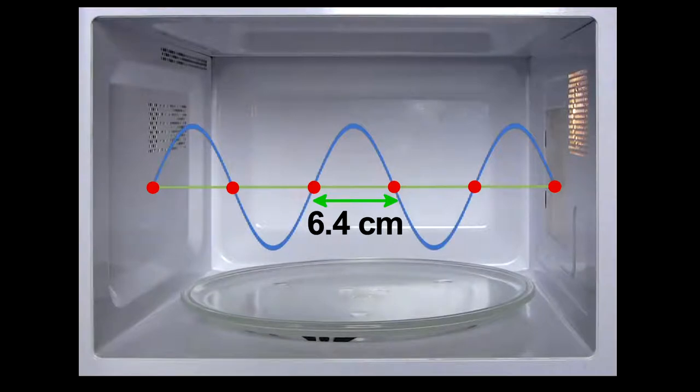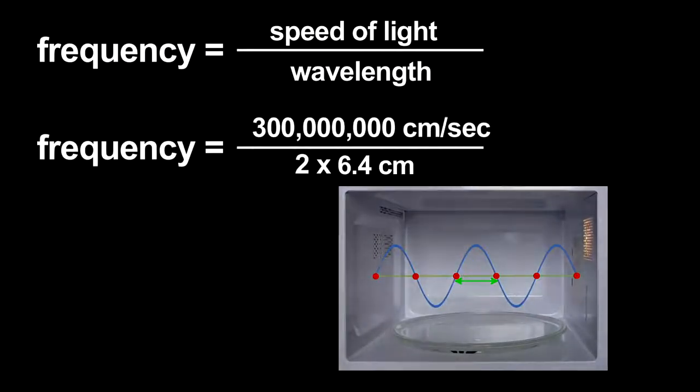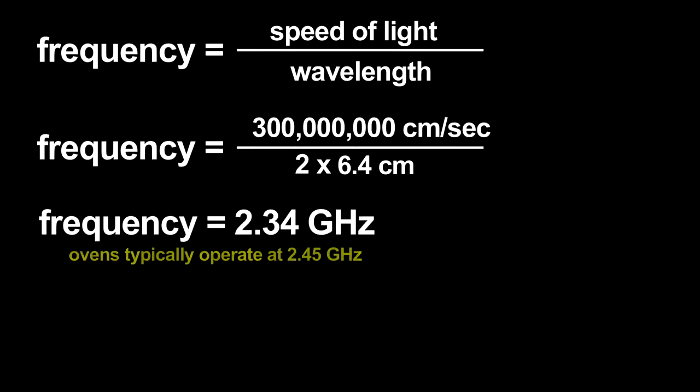Using that wavelength, I can estimate the microwave radiation's frequency. The frequency is related to the wavelength by the speed of light. I get an answer that only has a four or five percent error. Not bad for this primitive measurement.